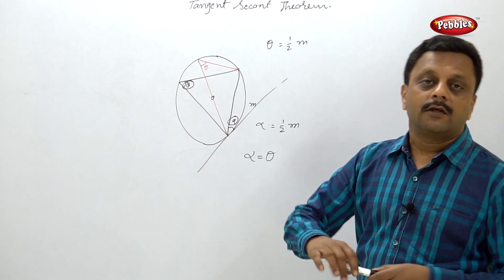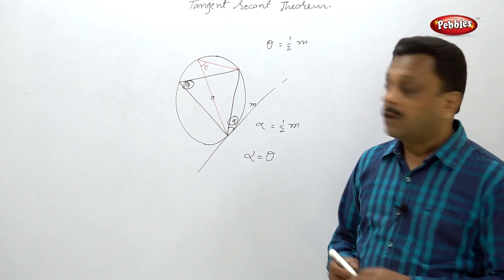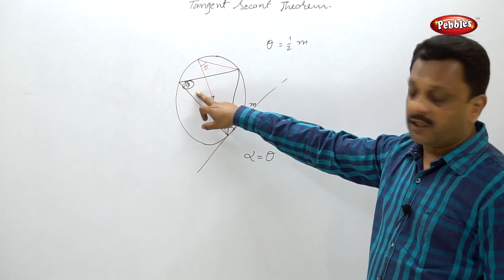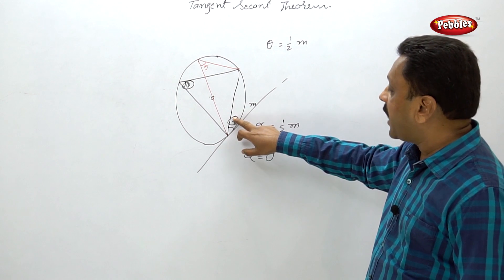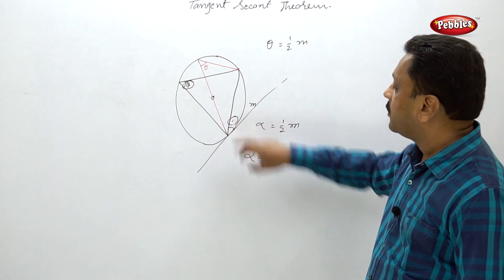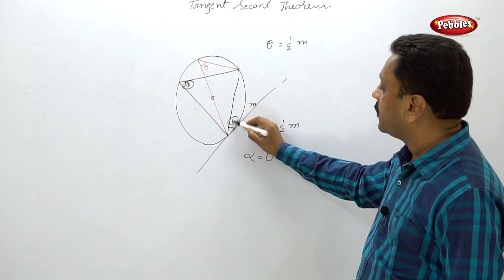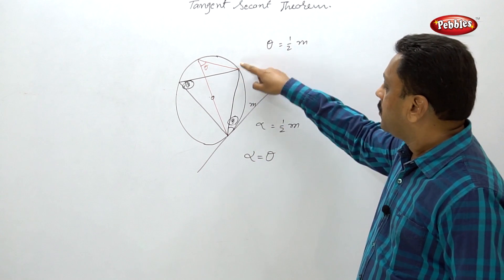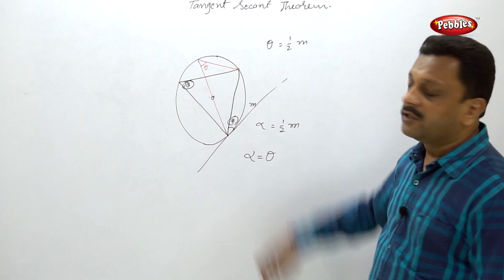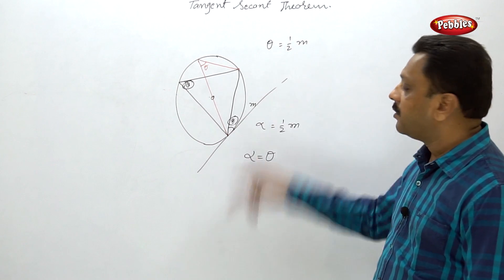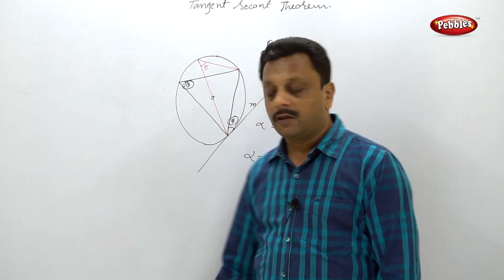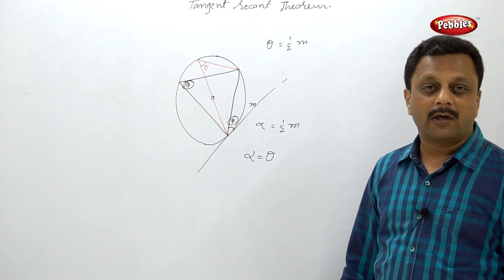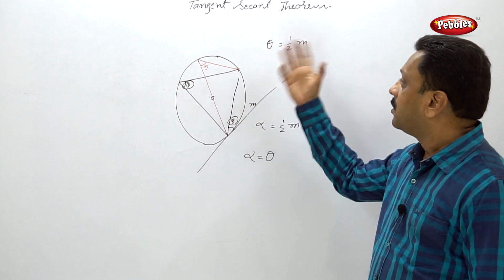Simply, the converse is also true — if this angle theta equals that angle theta, and one arm is a chord, then the second arm must be a tangent. Then this line is a tangent. This is called the converse of the tangent alternate segment theorem.